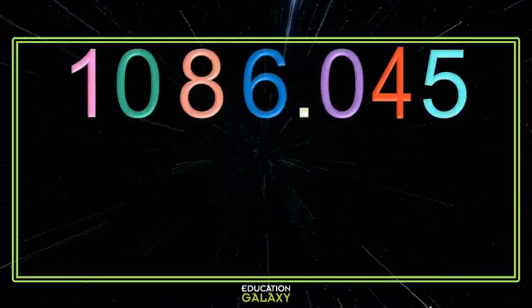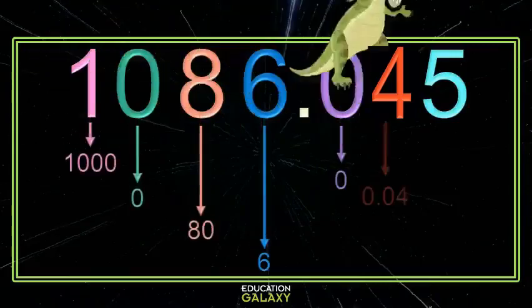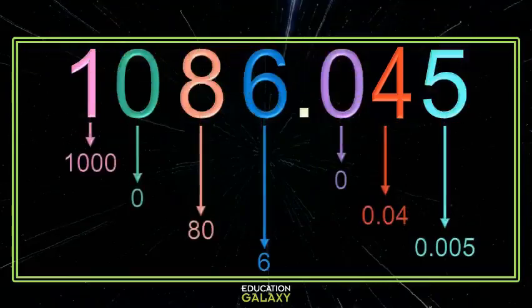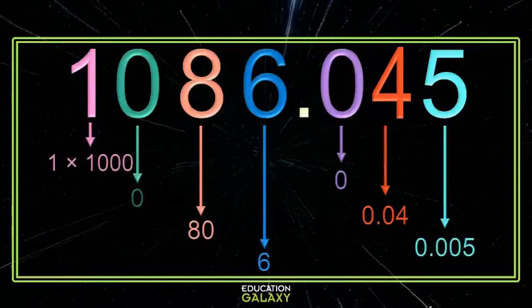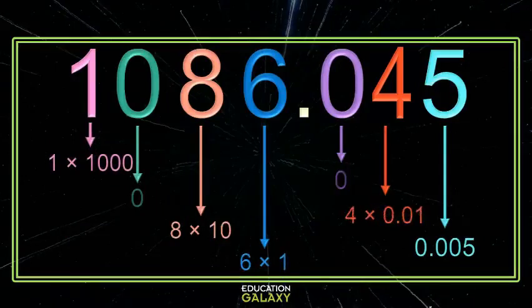The number's a little bigger — no problem. We're just going to start the same way and smash it up. So now we have our place values. We know that the thousand is just one thousand, the zero we won't worry about, the eight is eight tens, the six is six ones, the zero we don't worry about, the four in the hundredths place is four hundredths, and the five in the thousandths place is five thousandths.